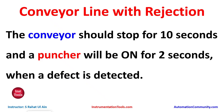Conveyor line with rejection. The conveyor should stop for 10 seconds and a puncher will be on for 2 seconds when a defect is detected. The defect will be detected by a sensor which will activate the puncher for 2 seconds and stop the conveyor for 10 seconds.